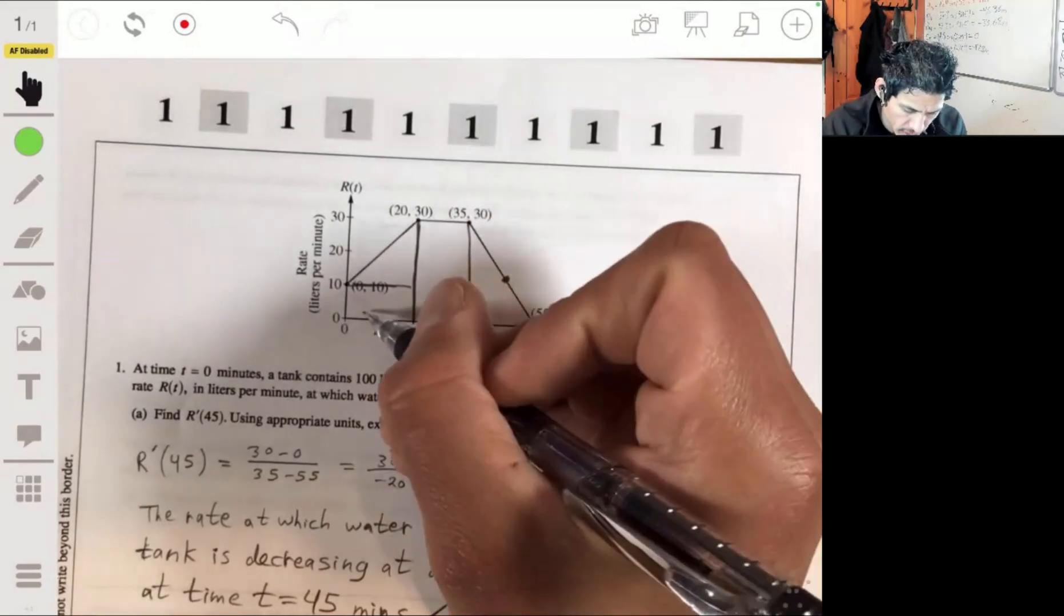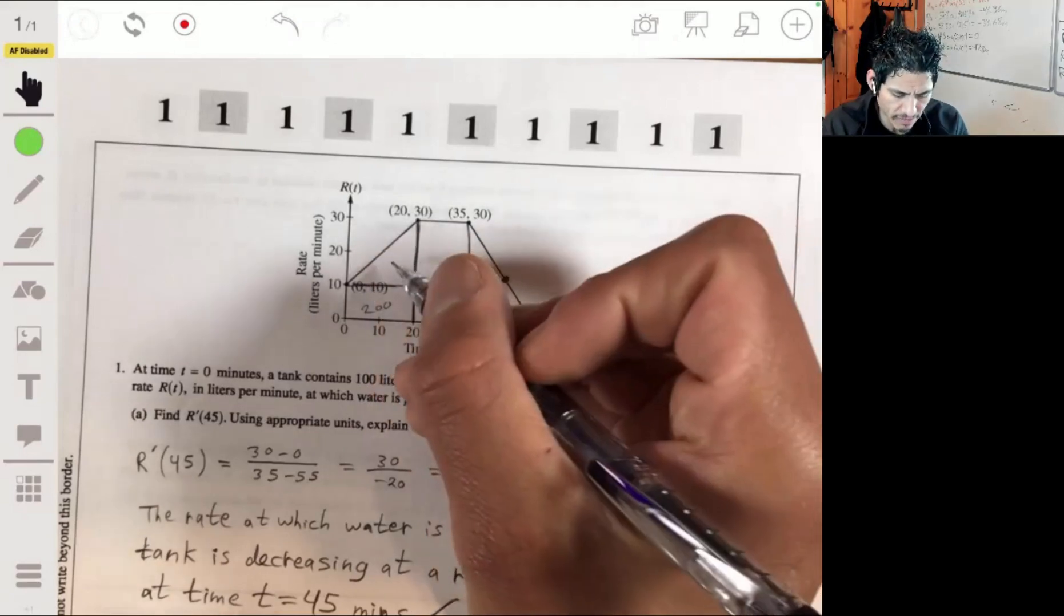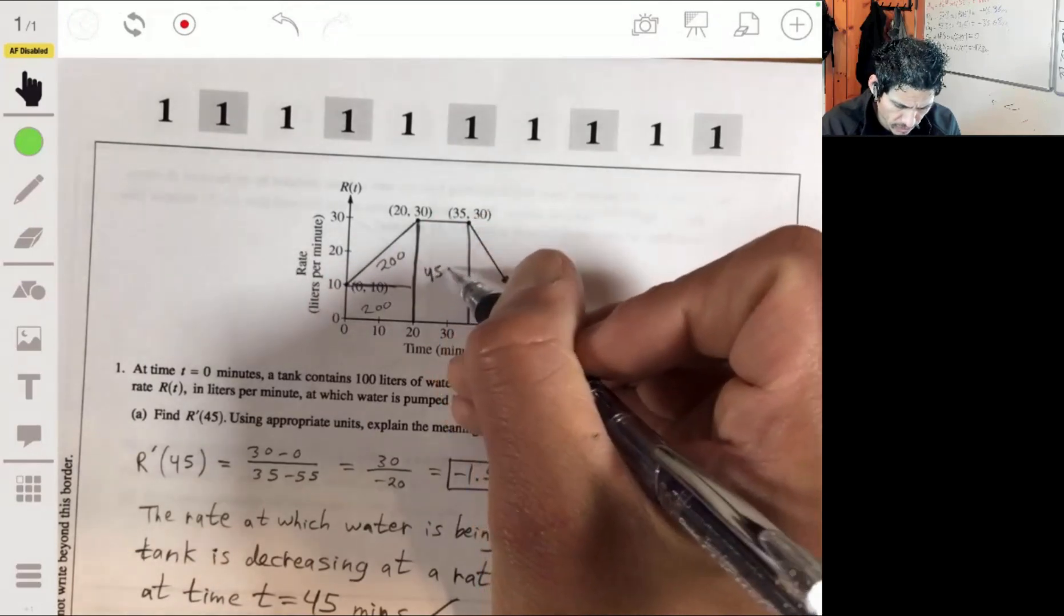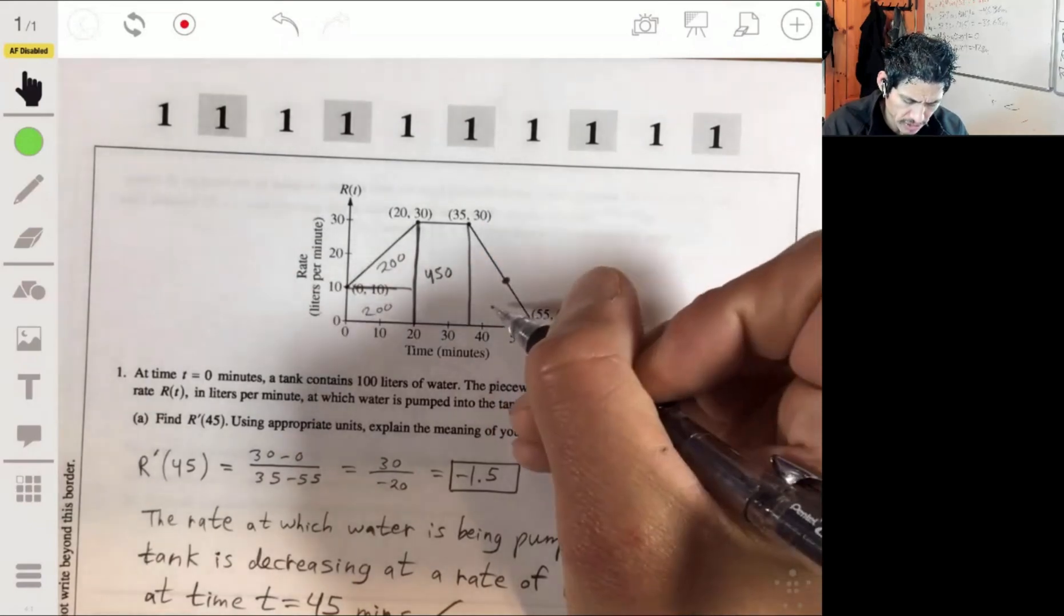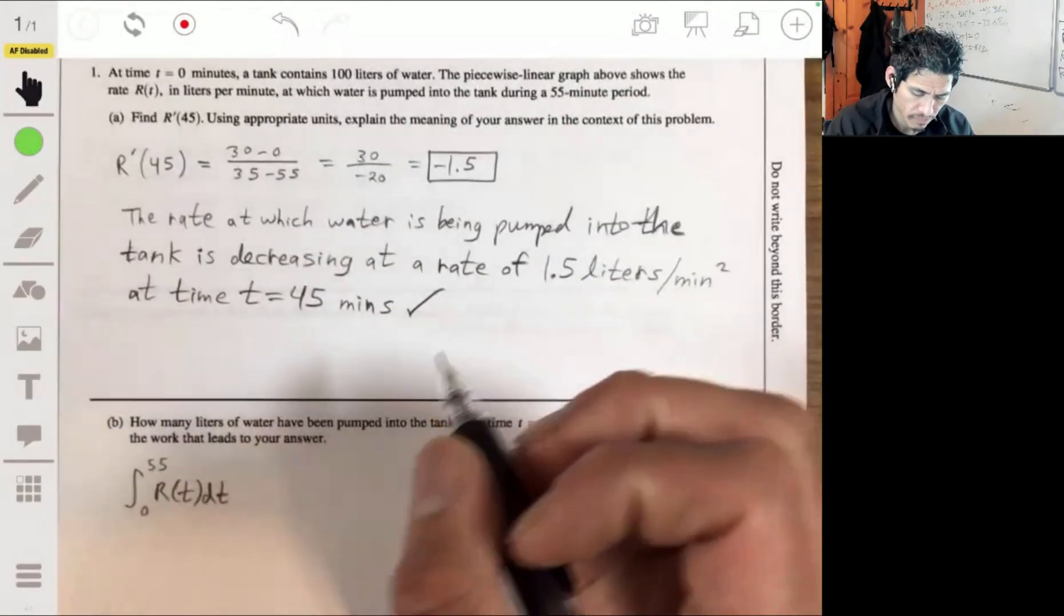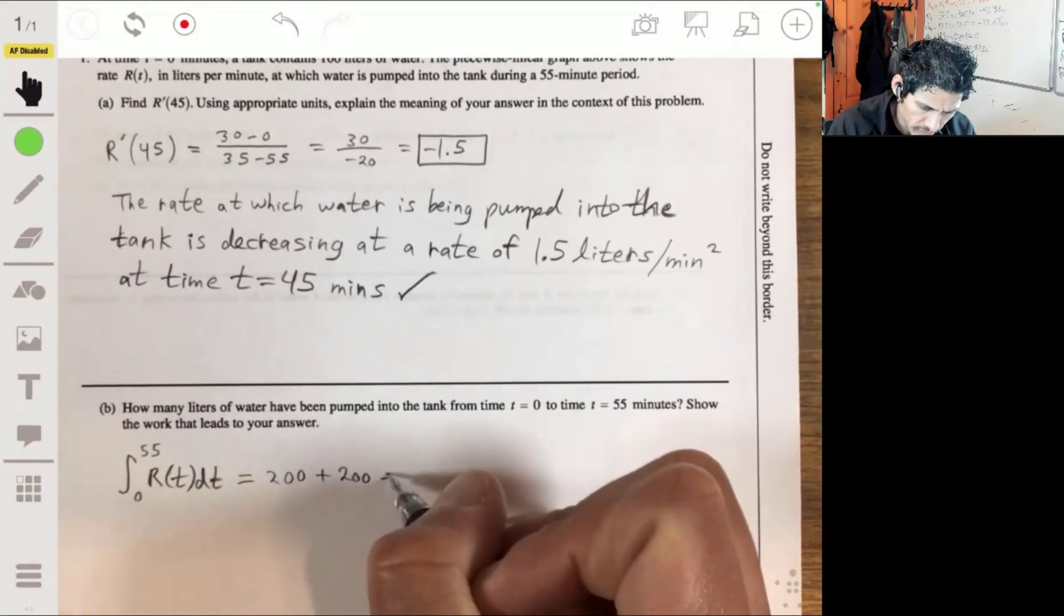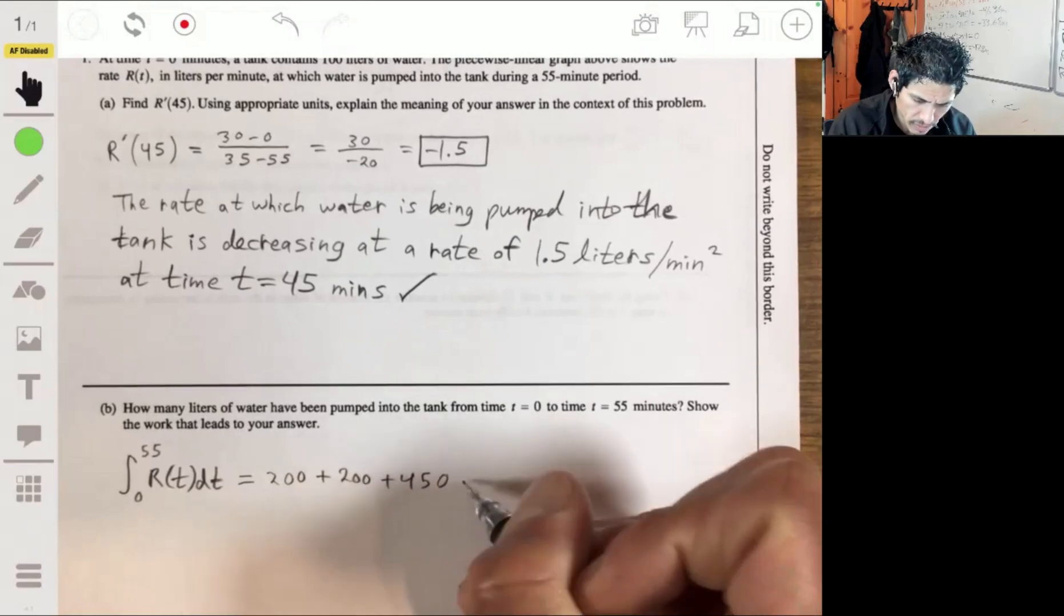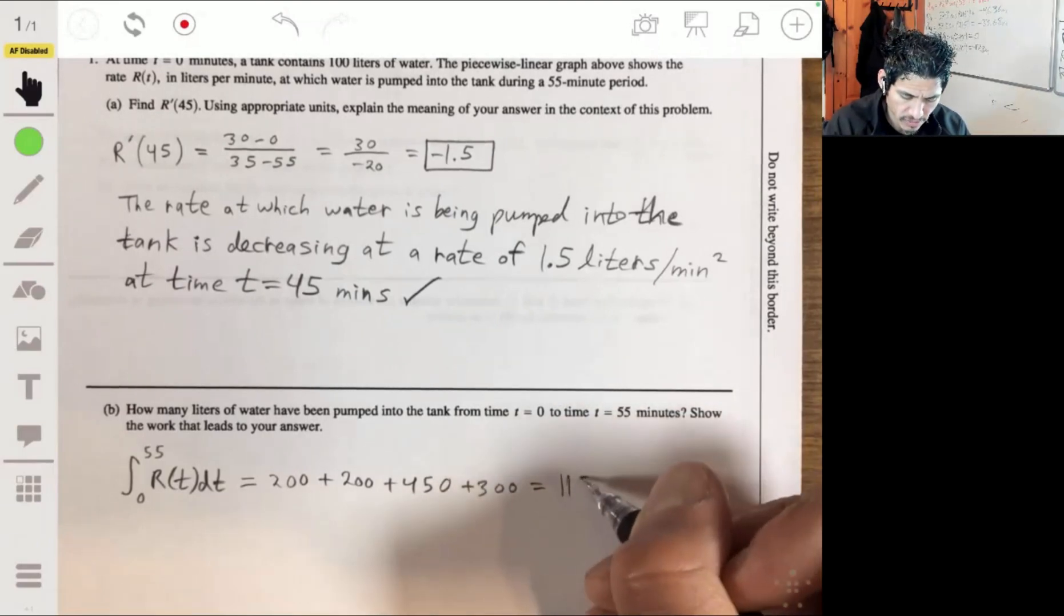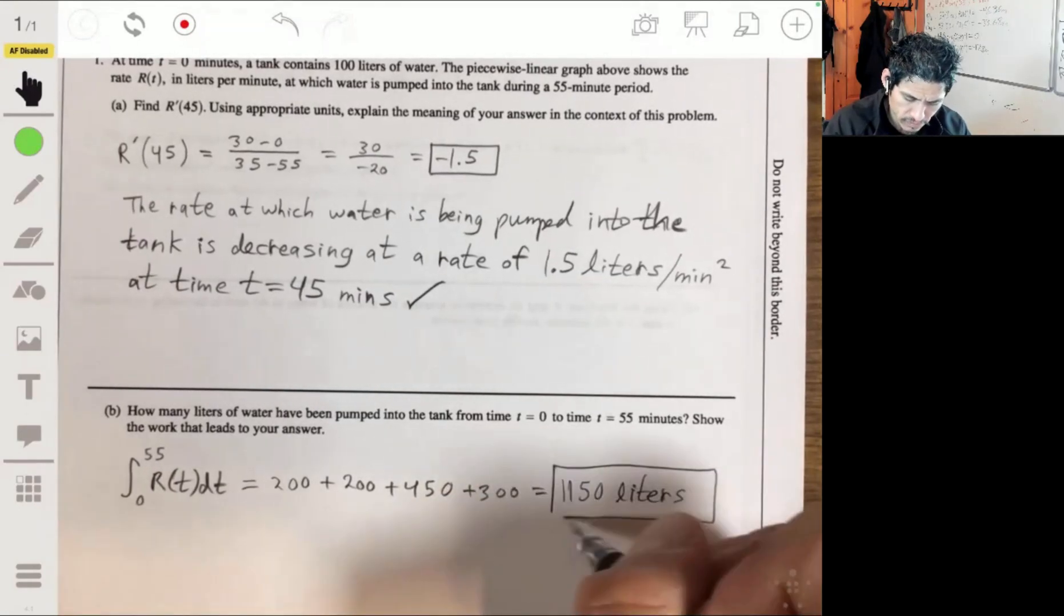We got 10 by 20, 200. 20 by 20 divided by half, so that's 200 as well. 15 by 30, 450. 30 by 20, 600 divided by 2 is 300. So we're going to have our total will be 200 plus 200 plus 450 plus 300, will get 1150 liters.